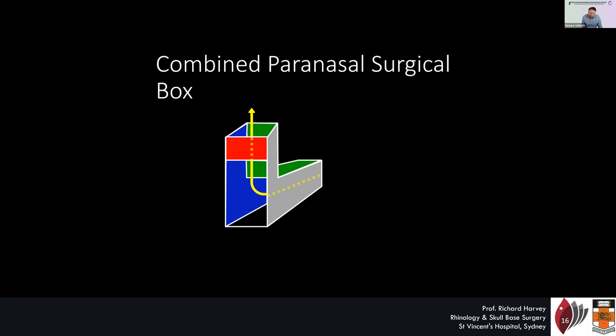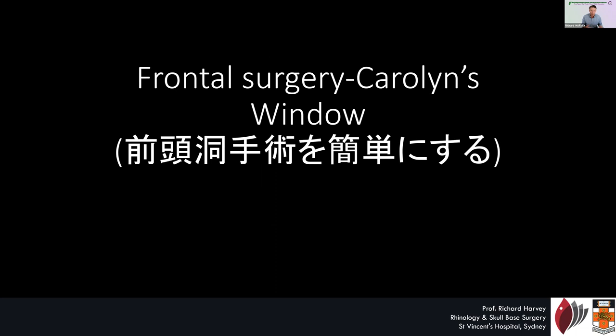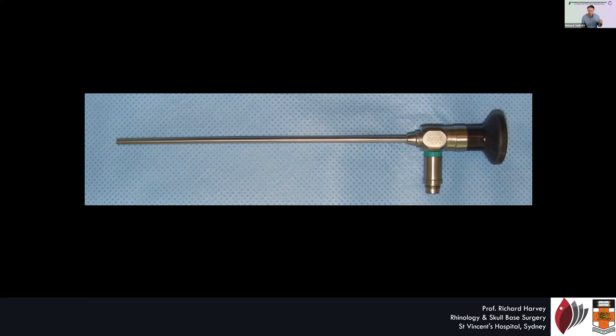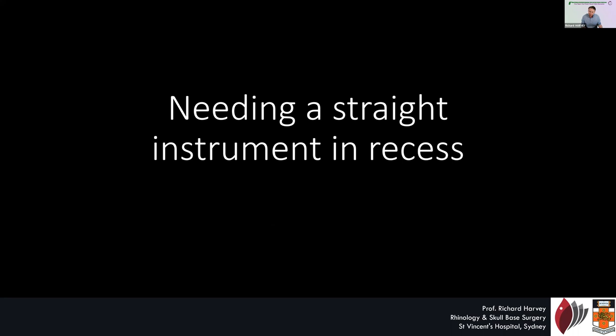If you ask how we go about doing this, we use a technique called Carolyn's Window. It's all about making it easy. As a skull-base surgeon, I don't like using angled endoscopes unless I have to. I really want to use a zero-degree scope to see what I'm looking at. I don't like working with curved instrumentation — when you start using curved instrumentation, your dexterity decreases because of the radius and arc of the instrument. So I try very hard to use straight instruments.